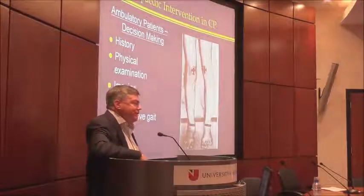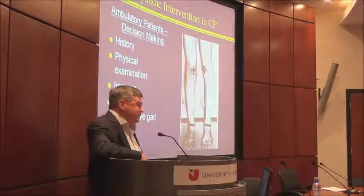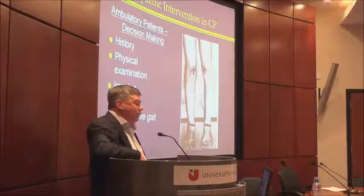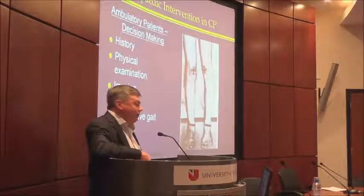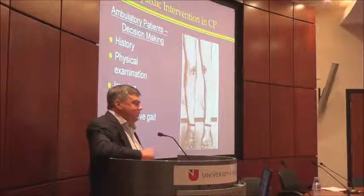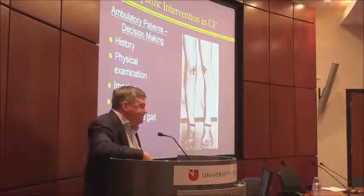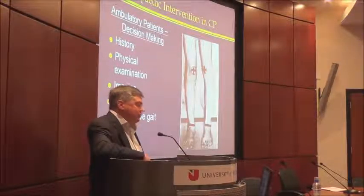These are the things to take into account for decision making with CP, particularly ambulatory patients. You need a good history — orthopedic surgeons aren't very good about taking histories, but it is important. You need to know if they met their motor milestones, how old they were when they walked, what surgeries they've had. You have to do a careful physical exam. Their extremity exam is very important. Imaging is sometimes of value, and we'll talk a little about gait analysis.